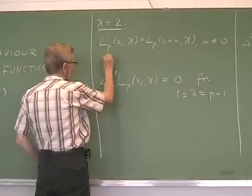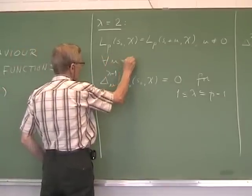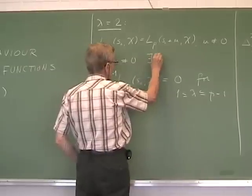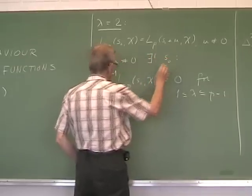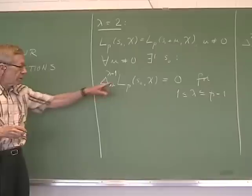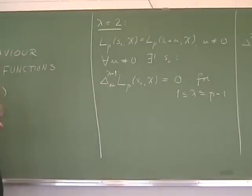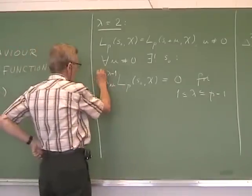Completely: for any U non-zero, there exists a unique point s not such that this is true. So this is our main result.